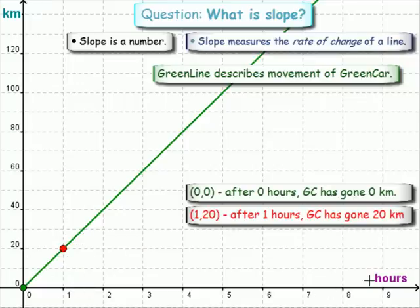Let's look at another point. Here's our grid point one twenty. That means after one hour, the green car has gone 20 kilometers.